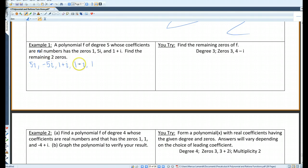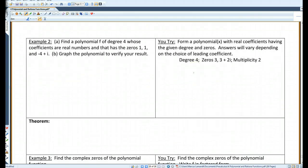So 1, 2, 3, 4, 5. And these were the two missing zeros. I'll let you guys try this one over here. Example 2.